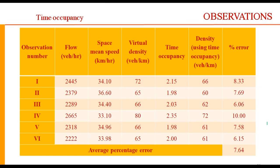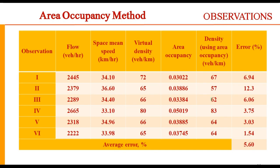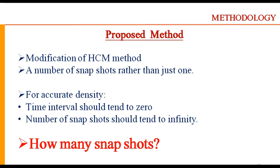The time occupancy method gives quite good results with an average error of just 7.64%, and the area occupancy method gives results with an average error of 5.6%. However, both methods are also quite laborious as they require calculations for each vehicle in each time interval, so they are not very popular. The popular HCM method, where you take a snapshot over one kilometer of highway and count vehicles, gives very misleading results in its present form, so we tried to modify it.